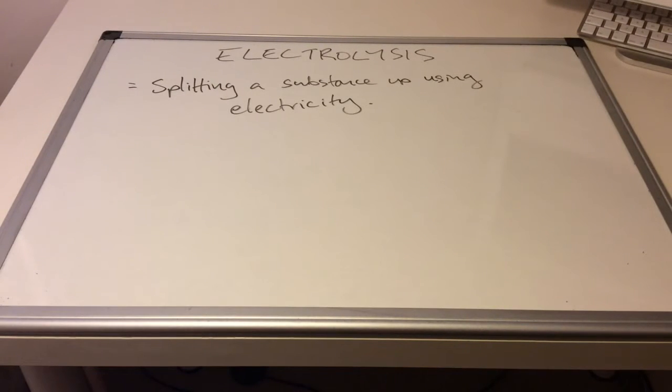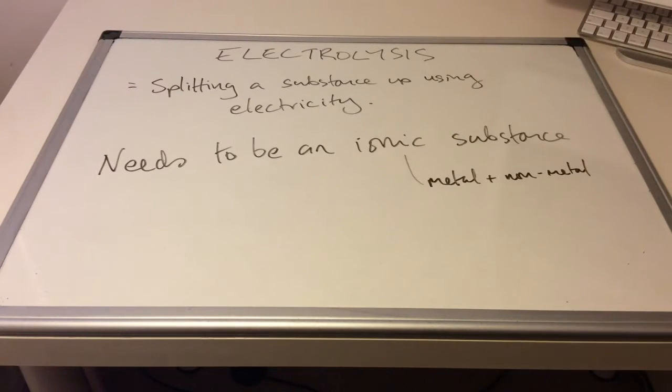In this video I'm going to look at electrolysis and that's simply splitting a substance up using electricity. The substance that's going to be split up needs to be an ionic substance. And just a reminder there for you that ionic substances are metals bonded to non-metals.